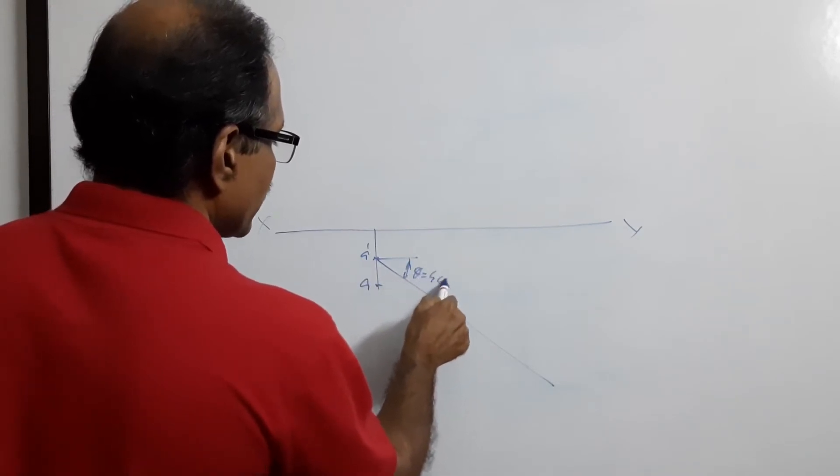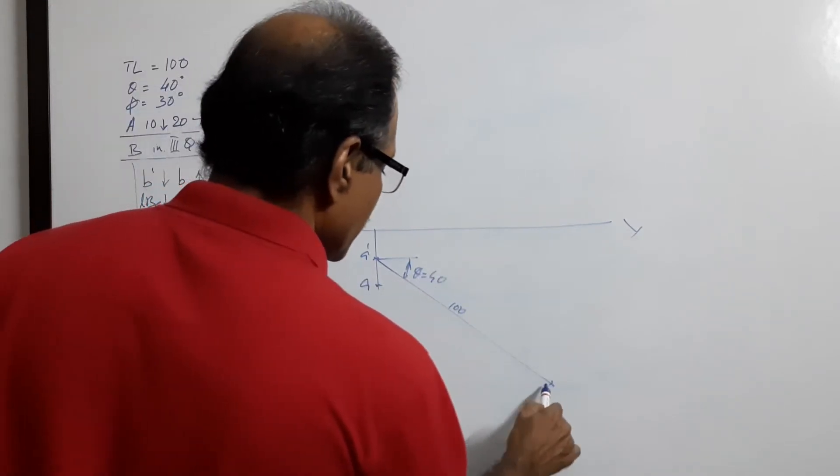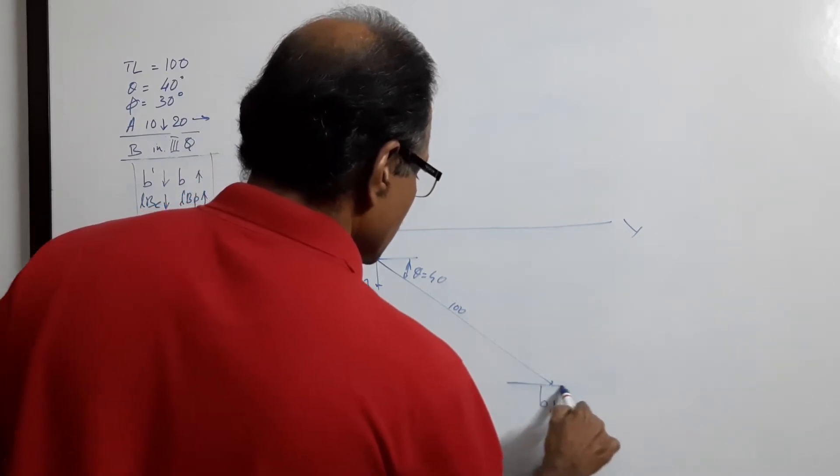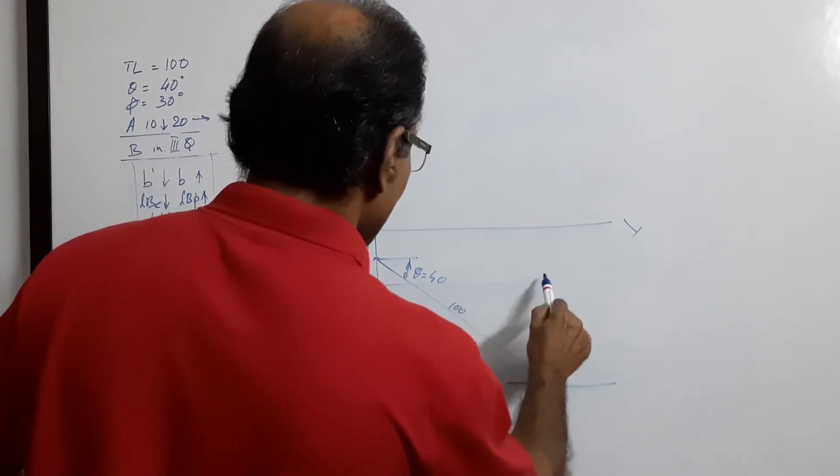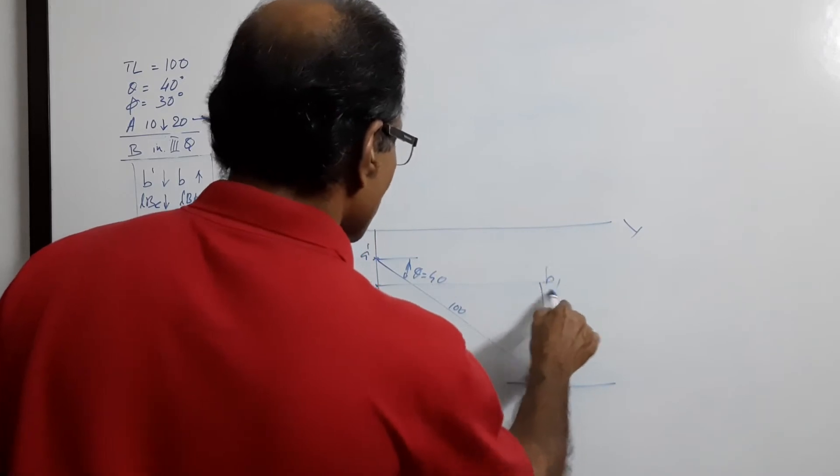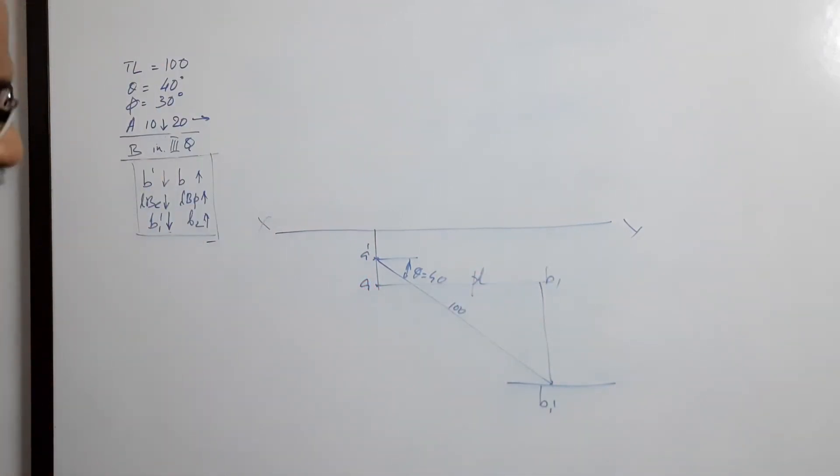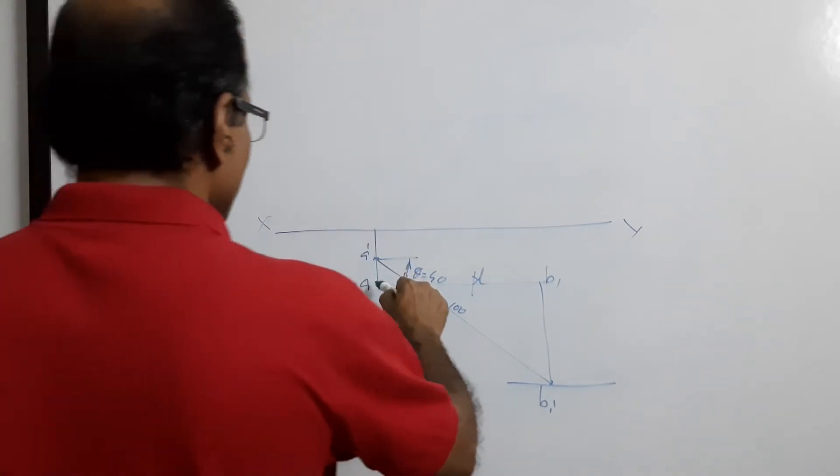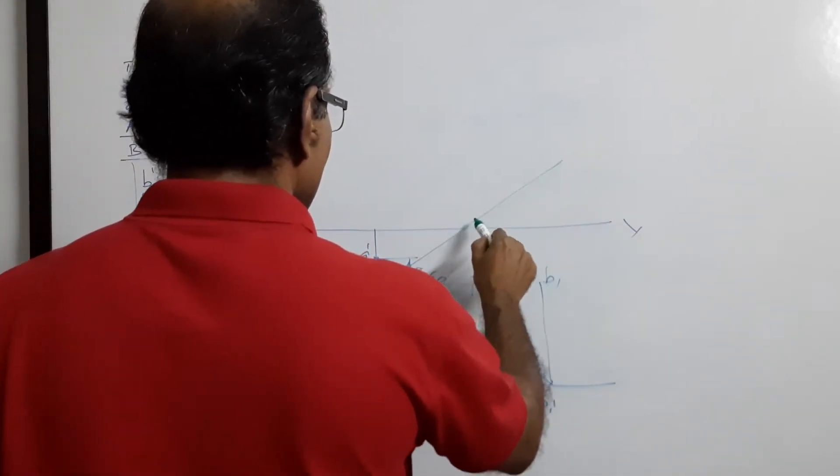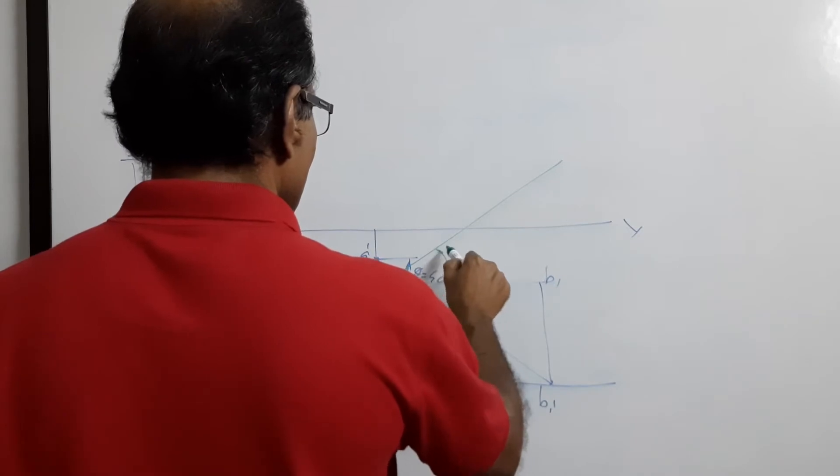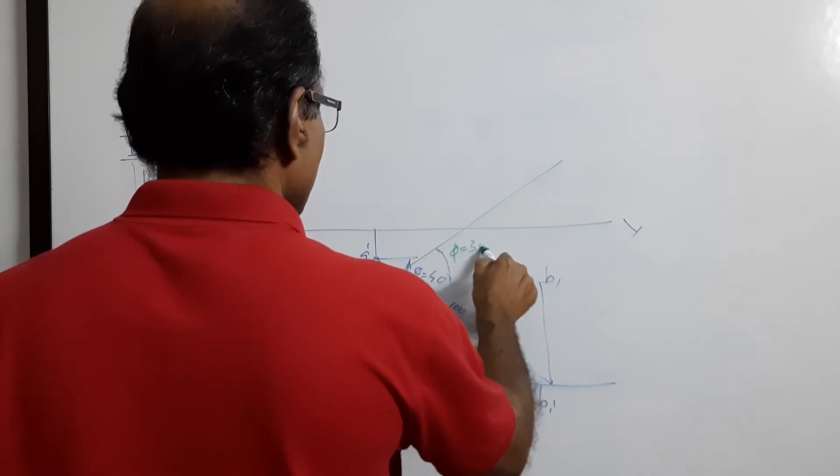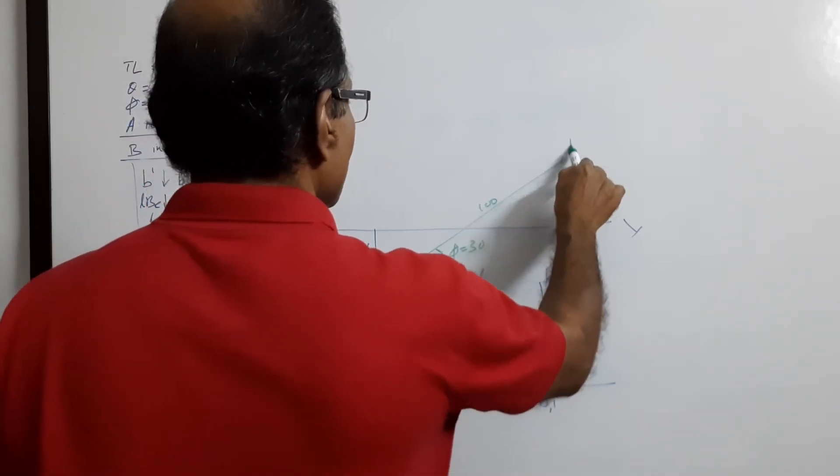Theta equals 40, 100 B1 dash locus plan line B1 plan line. Phi equals 30, 100 B2.